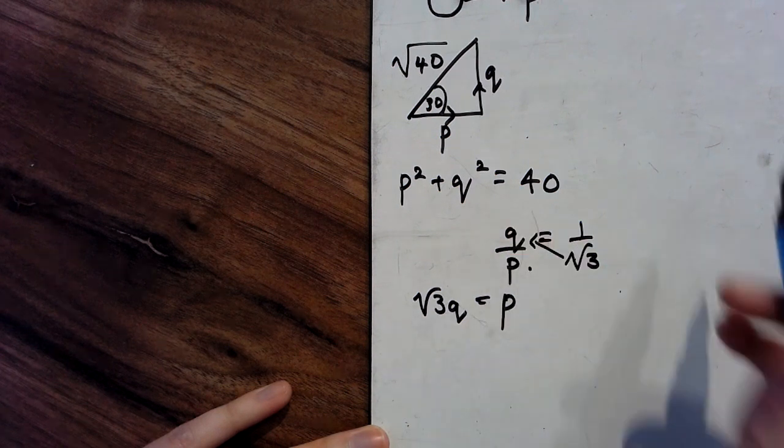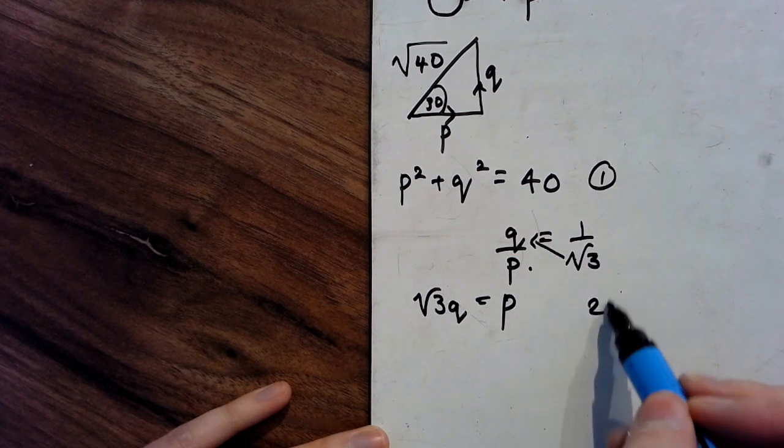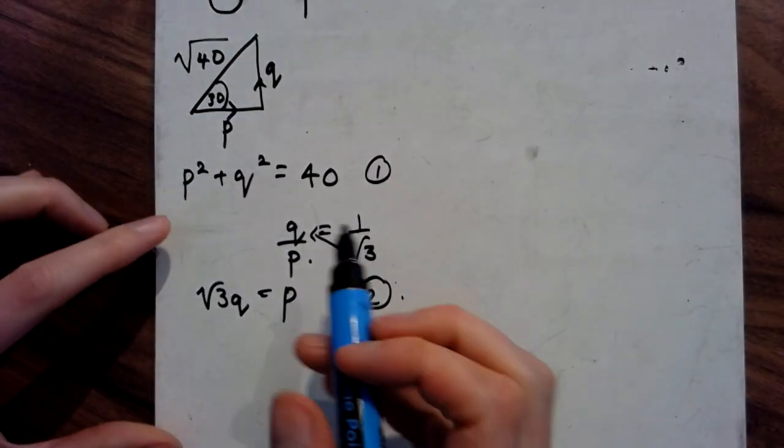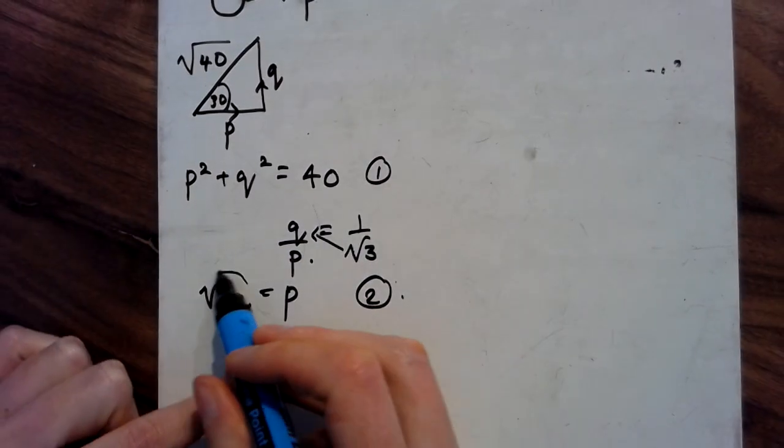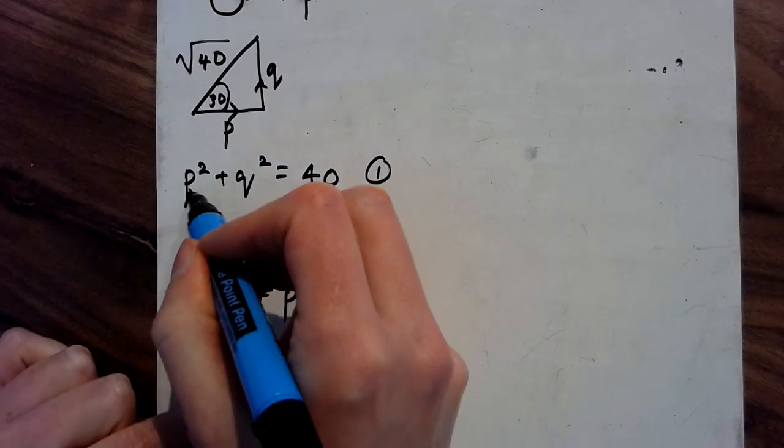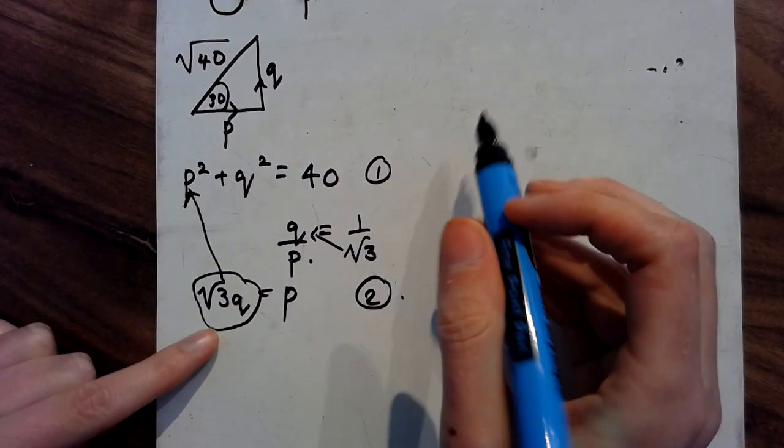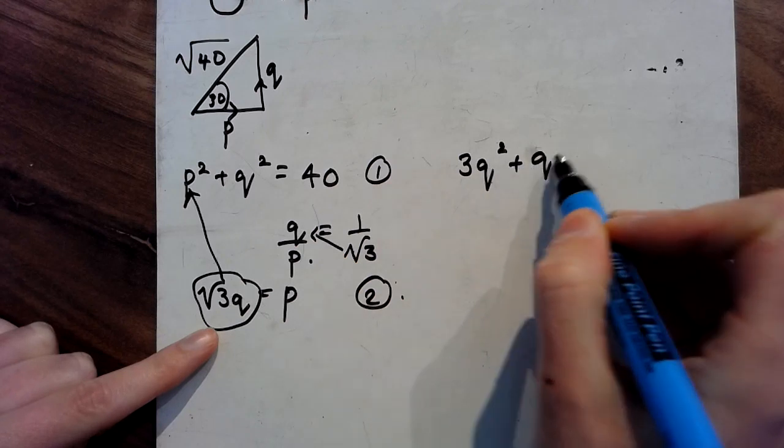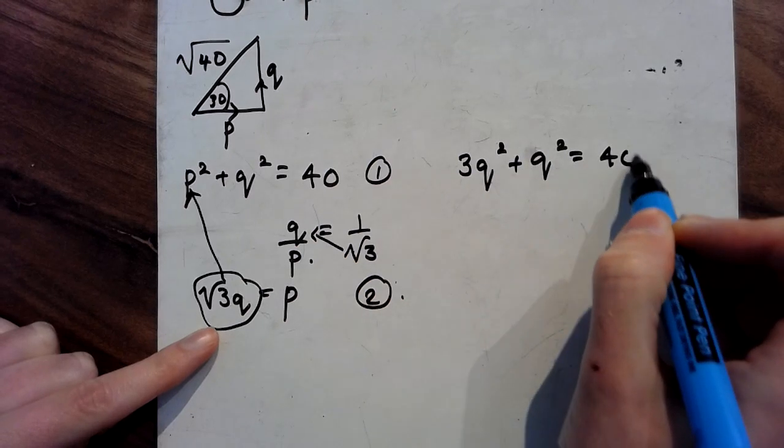and now I just have some kind of horrible simultaneous equations. So what I'm going to do is substitute what P is worth into that one. So squaring it, I'd get 3Q squared plus Q squared equals 40.